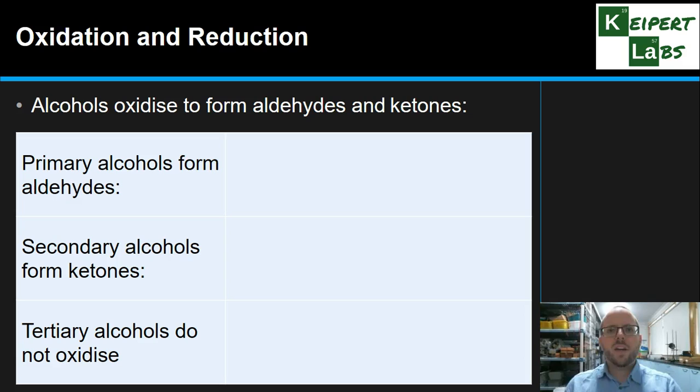Now we're going to have a look at oxidation and reduction reactions with alcohols. So these are really, really useful to keep in mind, seeing that we can actually turn one member of one family into a member of a different family by chemical reaction. Okay, so alcohols will oxidise. And depending on what kind of alcohol that we have, they'll oxidise to form either an aldehyde or a ketone.